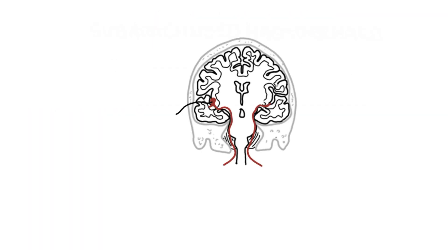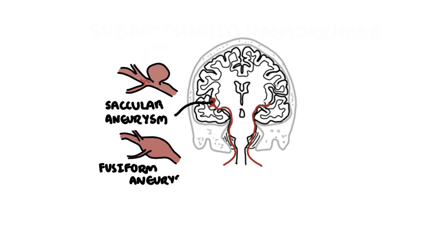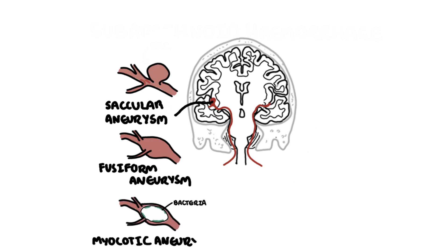Most spontaneous subarachnoid hemorrhages are caused by ruptured saccular aneurysms. If the saccular aneurysm is large enough, it actually weakens the walls of the blood vessel, causing rupture and hemorrhage. Other types of aneurysms include fusiform aneurysm and mycotic aneurysm secondary to an infectious organism.